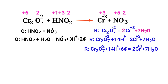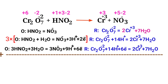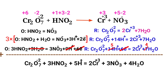The electrons lost in the oxidation half reaction must equal the electrons gained in the reduction half reaction. The oxidation half reaction has 2 electrons, while the reduction half reaction has 6 electrons. To balance the number of electrons, multiply the oxidation half reaction by a coefficient of 3. Now add both reactions together and cancel the same terms on each side.